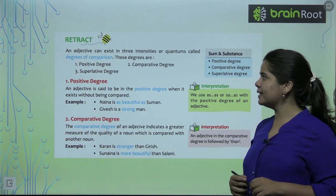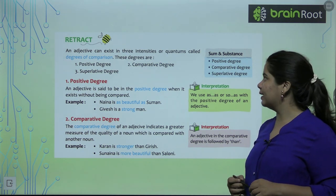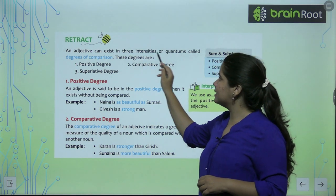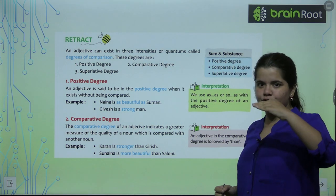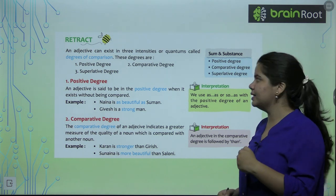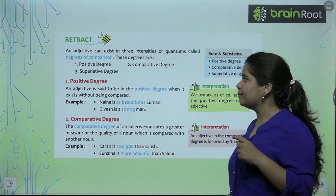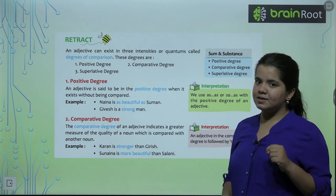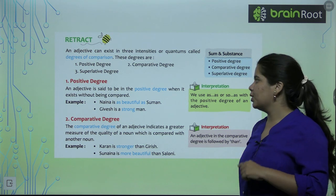For one adjective we have three intensities or levels. We say degrees of comparison. First we have positive degree, second comparative degree, and third superlative degree.